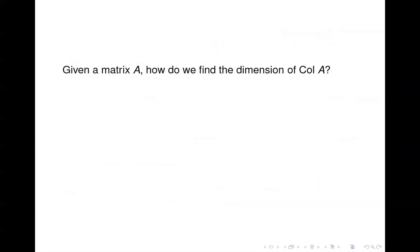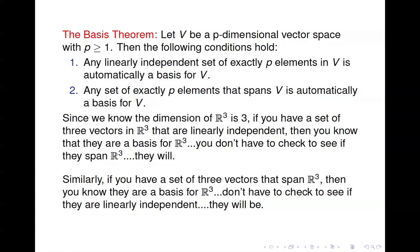We end up with three pieces of the puzzle: knowing the dimension, having a set of that many vectors that spans, or having a set of that many vectors that's linearly independent. If you have any two of those three pieces, you can conclude that you have a basis for the vector space you're dealing with.